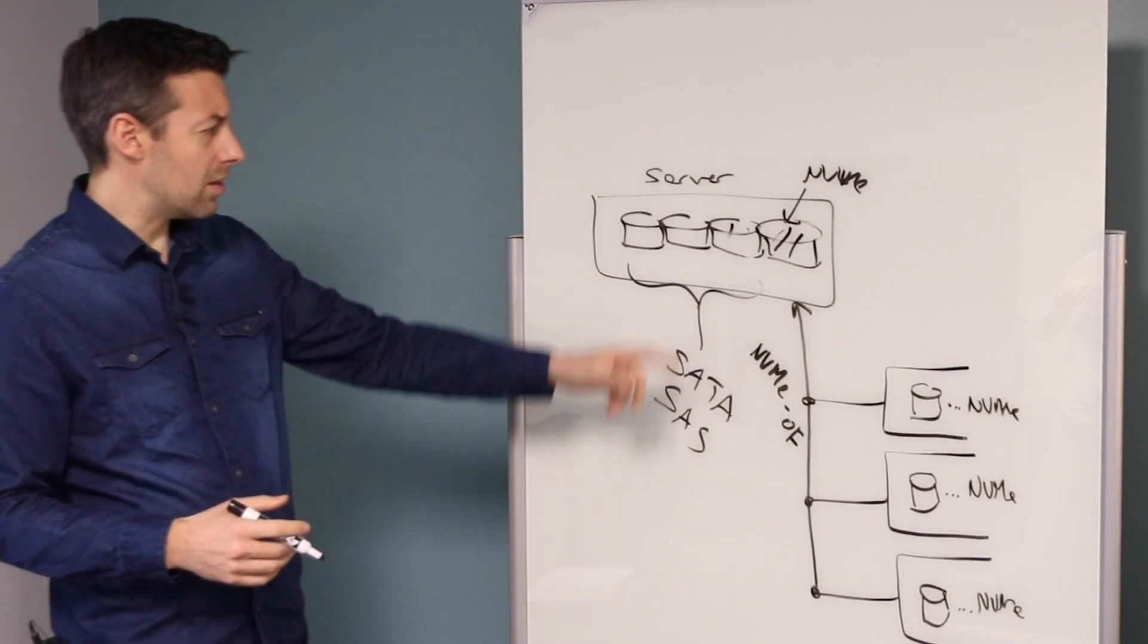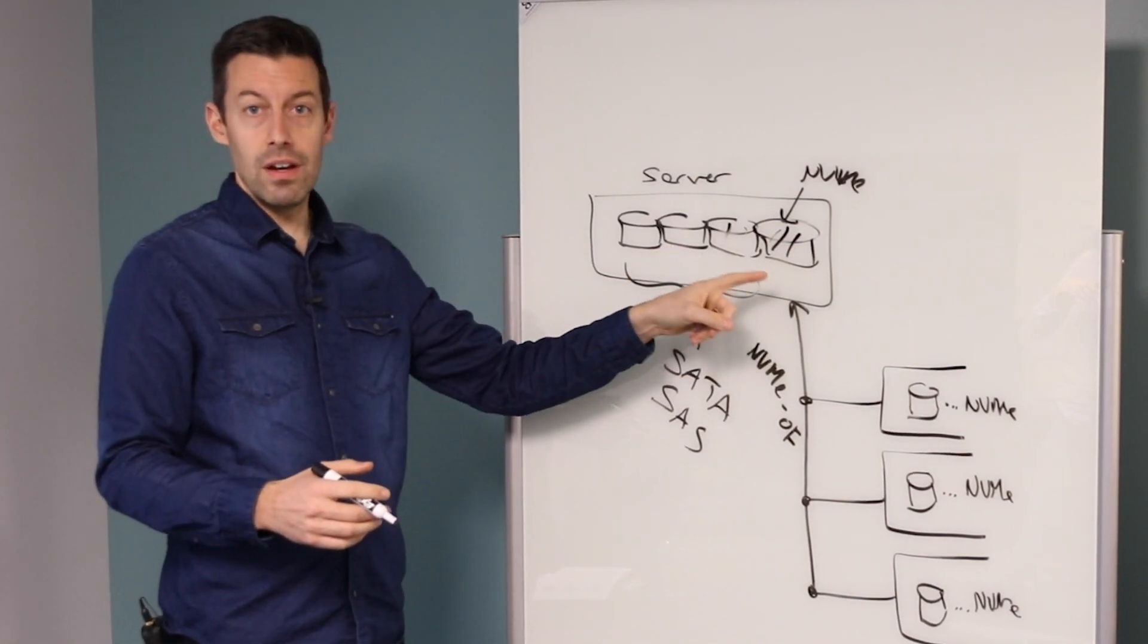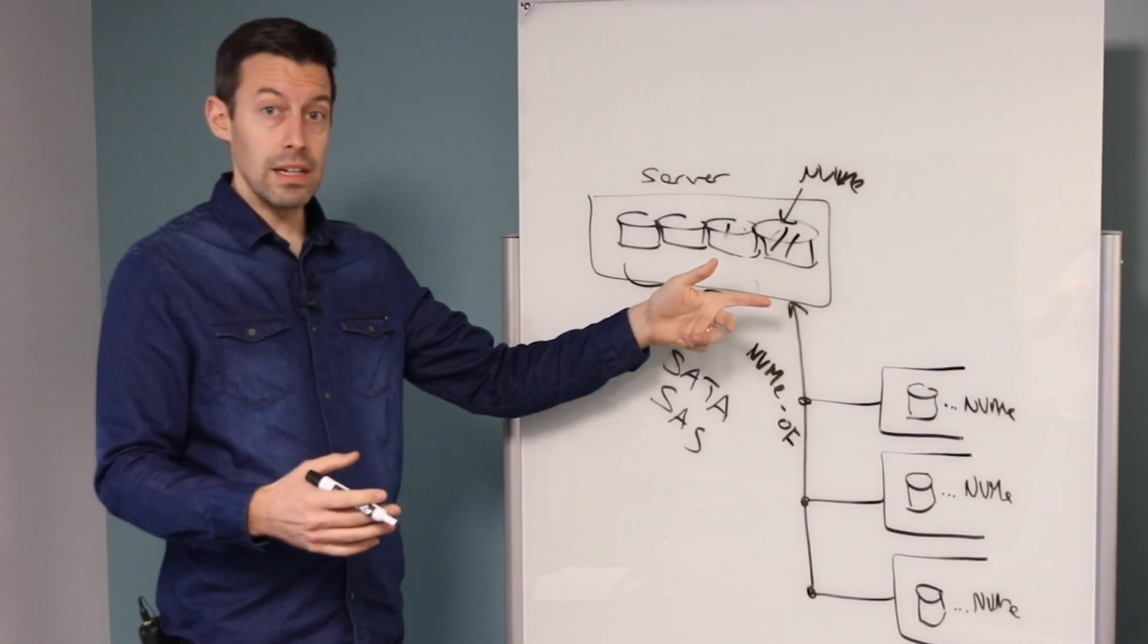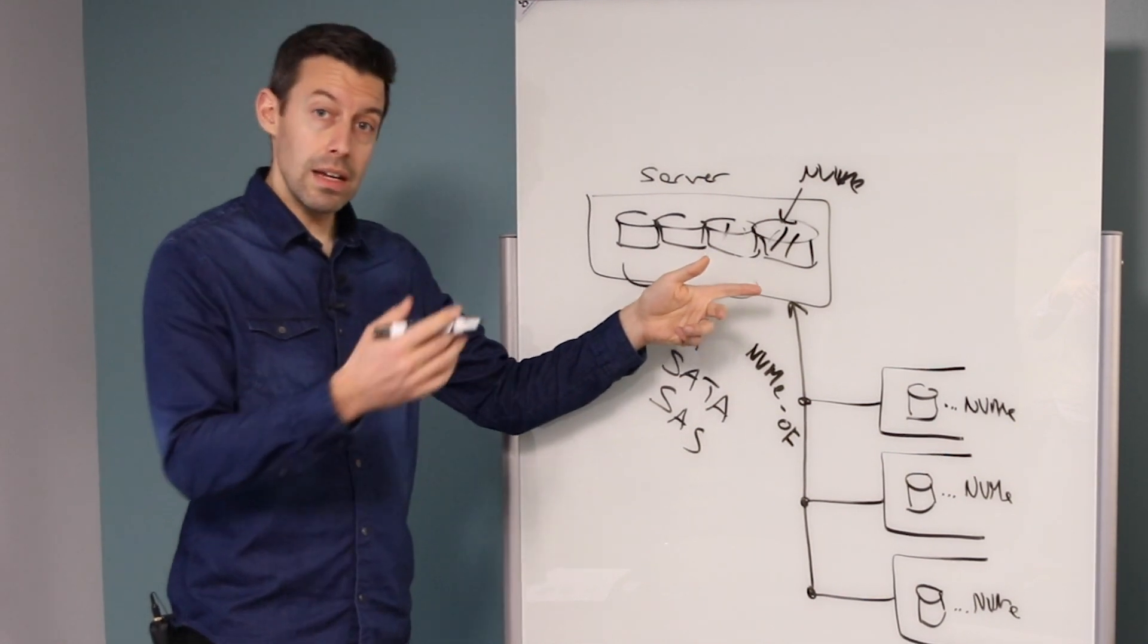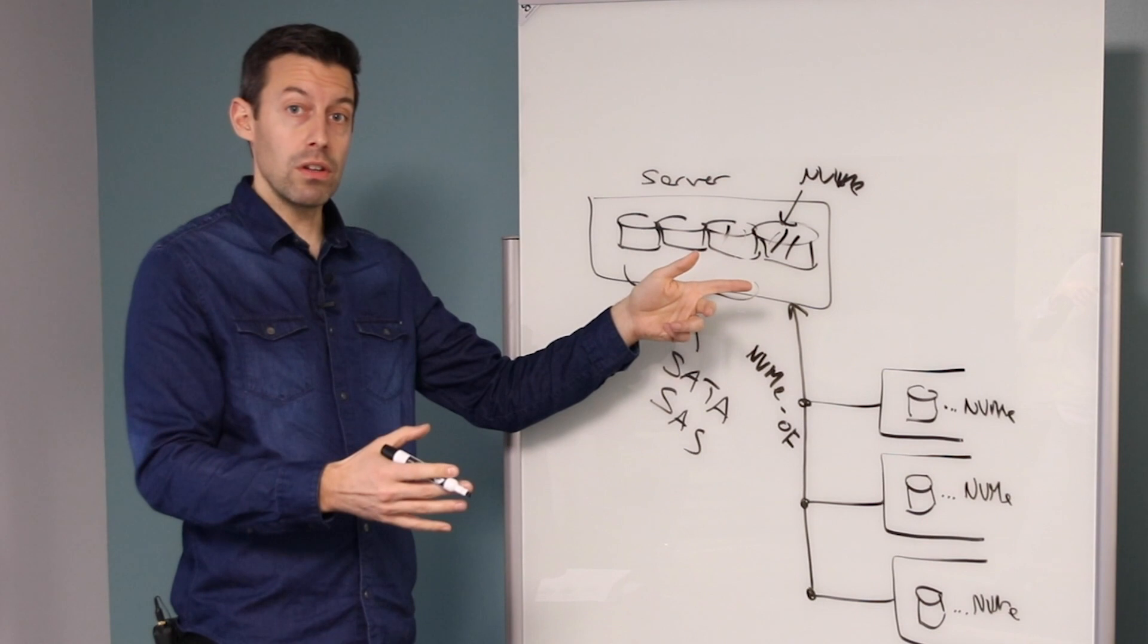And that might look something a little bit like this. You might have a server, it still might have some NVMe storage in it, but it also would have a NIC in it, maybe a 40 gig or even 100 gig NIC. And that NIC, the protocol running on top of that might be something like RoCE, RDMA over converged Ethernet.